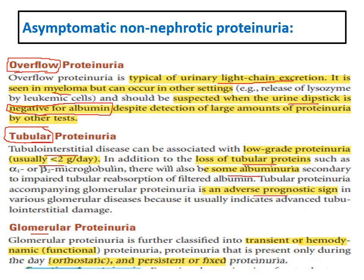Tubular proteinuria is a bad prognostic sign; if present alongside glomerular nephritis, it suggests tubular interstitial fibrosis. Non-nephrotic proteinuria from the glomeruli can be transient (functional), orthostatic, or persistent (fixed). It is important not to assume every proteinuria finding represents significant disease — transient causes must first be excluded.